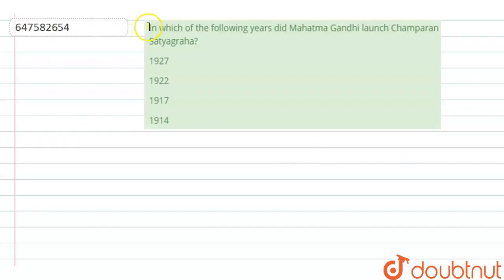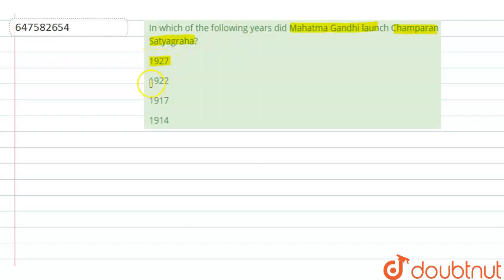Hello everyone! Our question is: in which of the following years did Mahatma Gandhi launch Champaran Satyagraha? I'm going to tell you in which year Mahatma Gandhi launched Champaran Satyagraha. The options are 1927, 1922, 1917, or 1914.